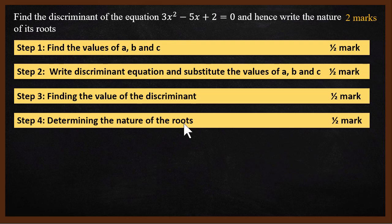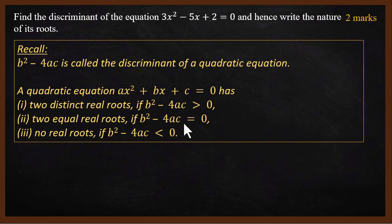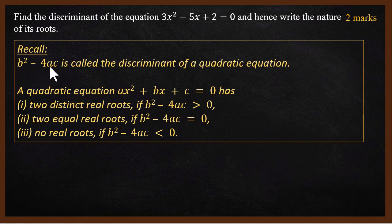Let's look at the theory. b² - 4ac is called the discriminant of a quadratic equation. A quadratic equation in standard form is ax² + bx + c = 0. In that, b² - 4ac is the discriminant.